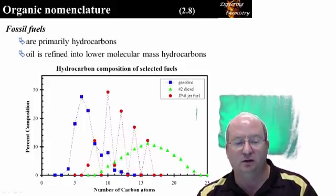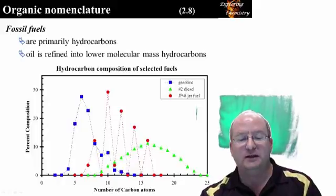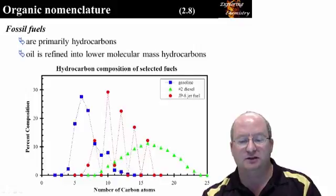Number 1 diesel fuel, the winter blend, has fewer heavier hydrocarbons which allows it to flow in colder temperatures. Number 1 diesel fuel is too volatile in summer and burns incorrectly in automobile engines.